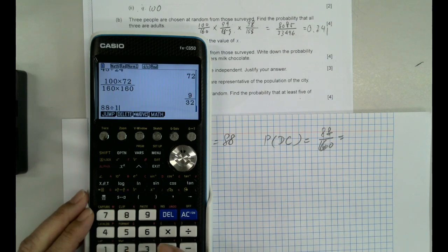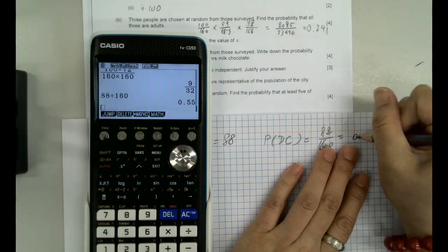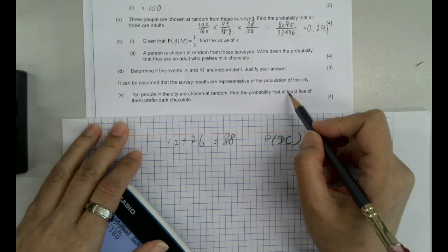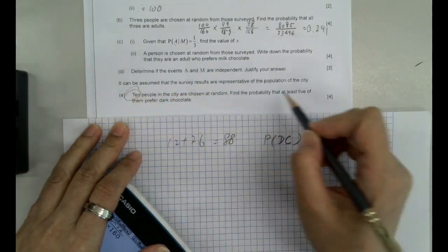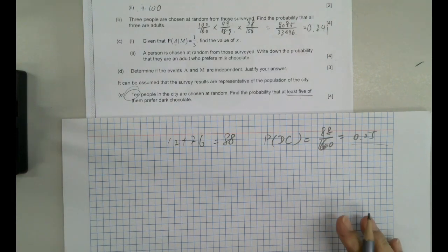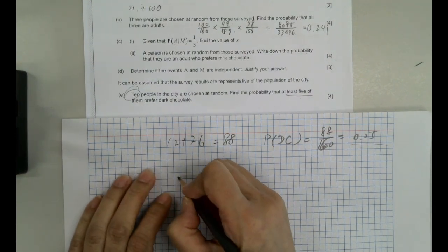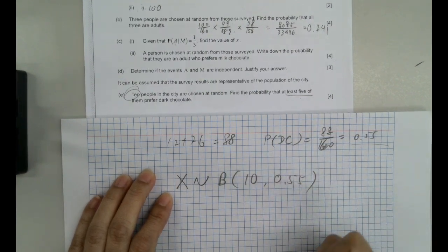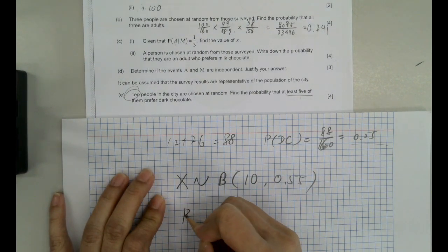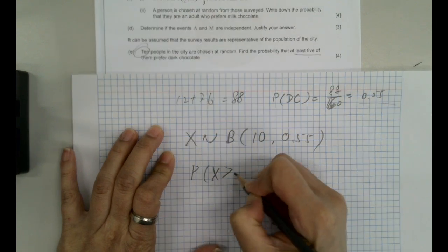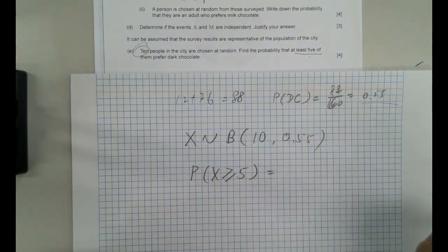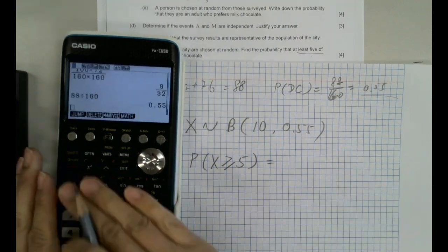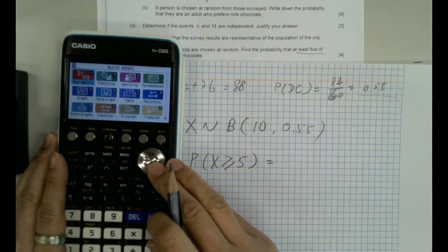I need to get to the question. Probability of people who like dark chocolate is 88 over 160. 88 divided by 160, 0.55. I want to sample 10 people and I want at least 5. This is pretty straightforward, it's a binomial. So X is a binomial with 10 trials and the probability is 0.55. We want at least 5 with a probability of X greater or equal to 5. So now we get to our binomial. So come with the GDC.